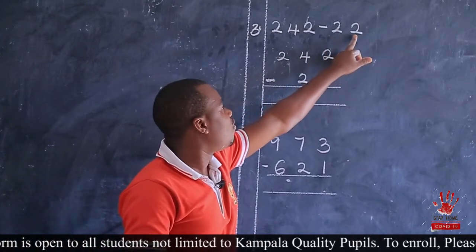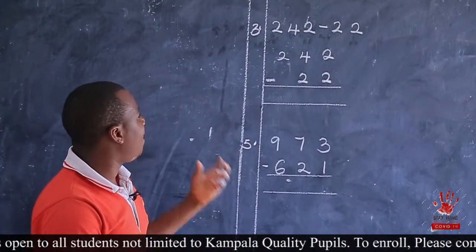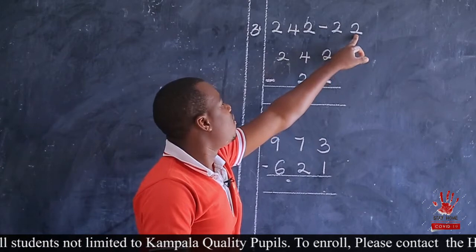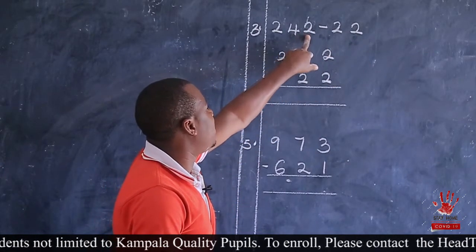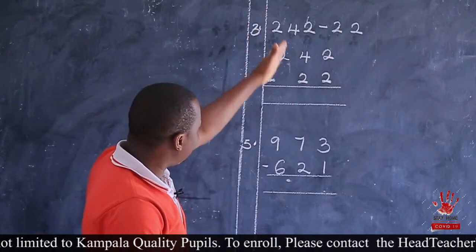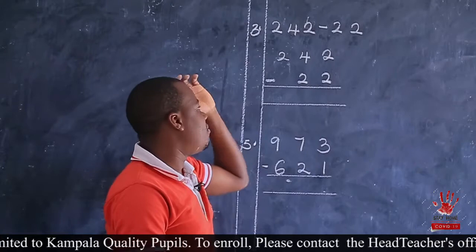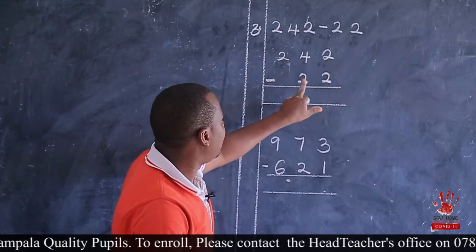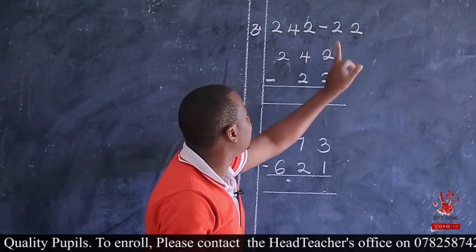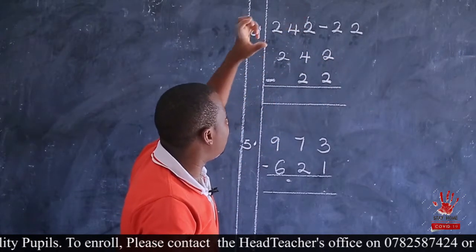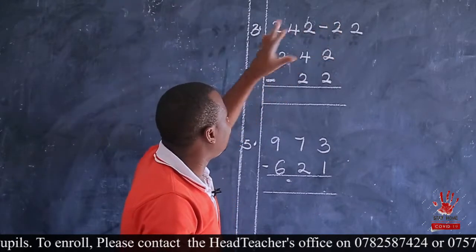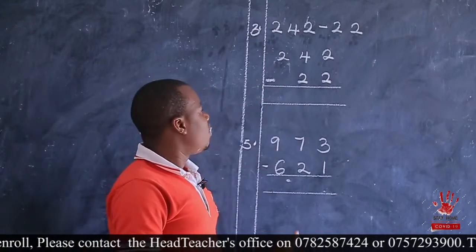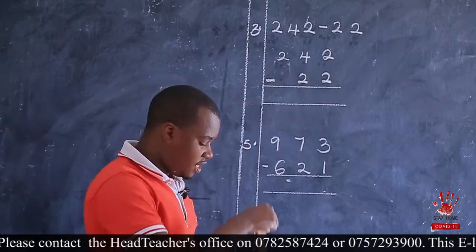On the second number we have ones and tens. So when we are arranging, the number under ones will match with the number under ones on the upper number. Then the number under tens will also match with the number under tens on the first number. That is how we arrange it. So this is 242, then 22. Two is under ones, and it is matching with two under ones on the first number. Then the second two is under tens, matching with four that is also under tens. Don't begin from the other side — you still begin from the ones place value.